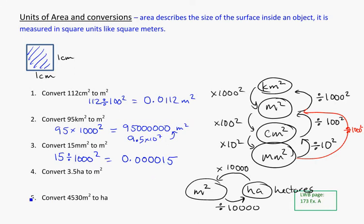And finally, looking at converting for hectares, convert 3.5 hectares into meters squared. So here I multiply by 10,000. 3.5 times 10,000. Putting that into your calculator, you should get 35,000 meters squared.